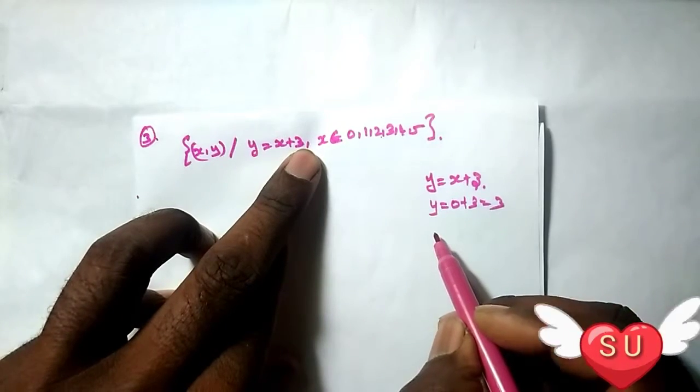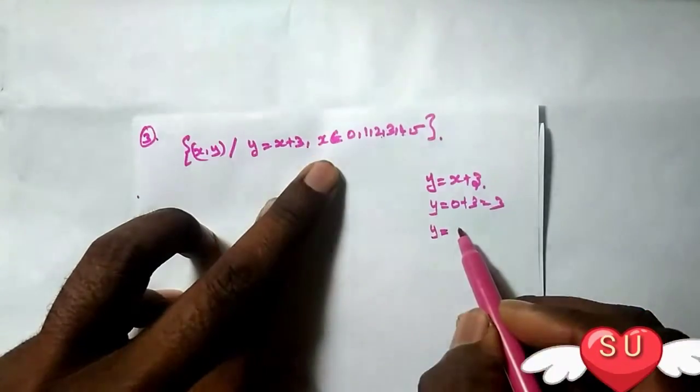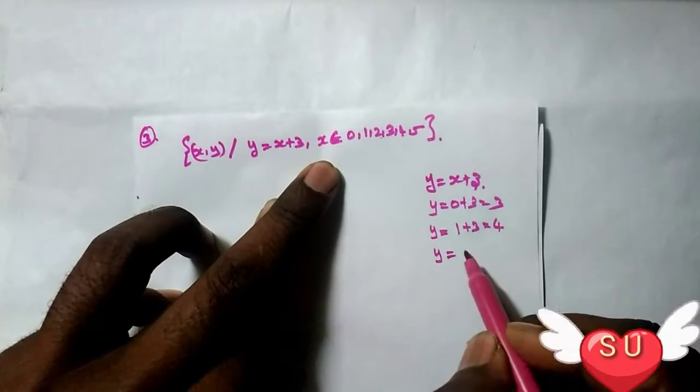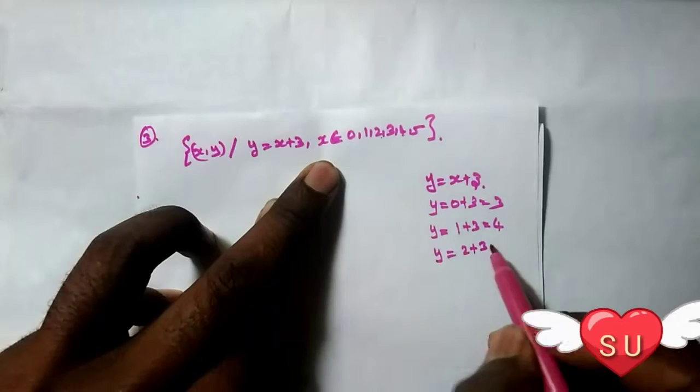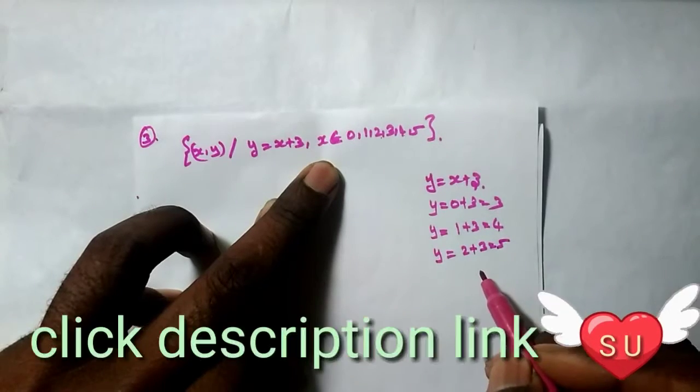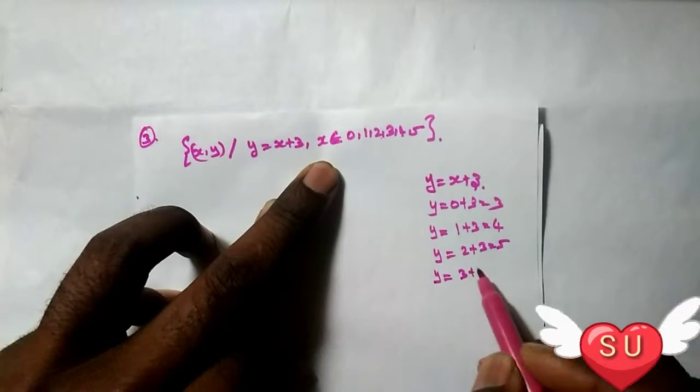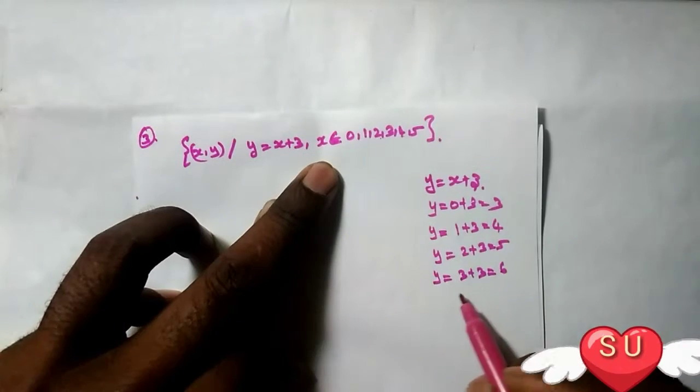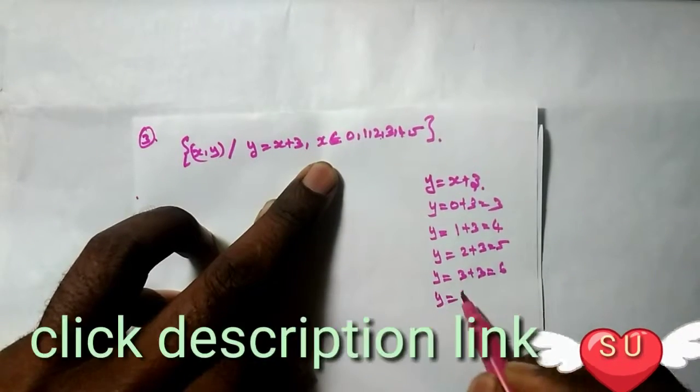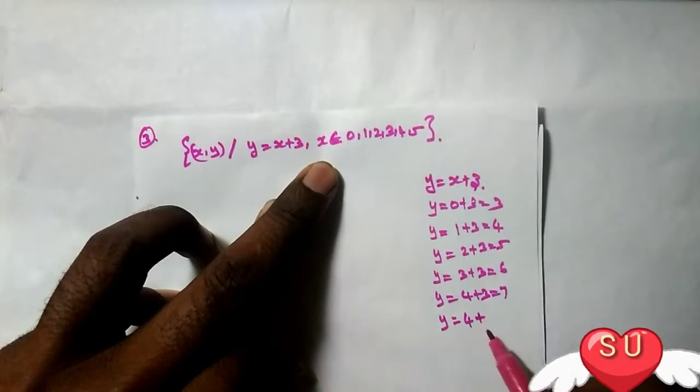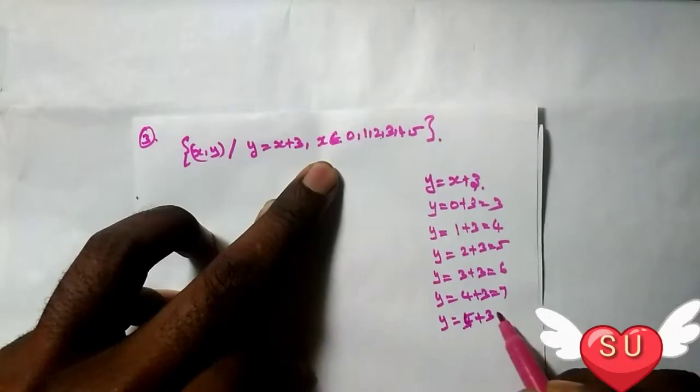Okay, next, when x equals 1, y equals 1 plus 3 equals 4. Next, y equals 2 plus 3 equals 5. Next, y equals 3 plus 3 equals 6. Next, y equals 4 plus 3 equals 7. And y equals 5 plus 3 equals 8.